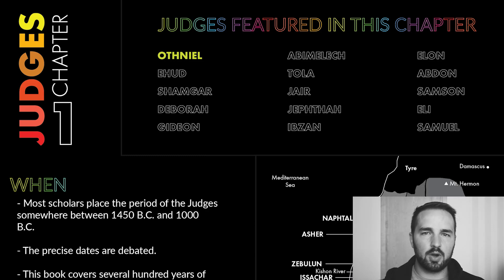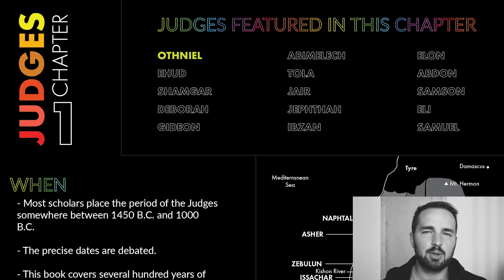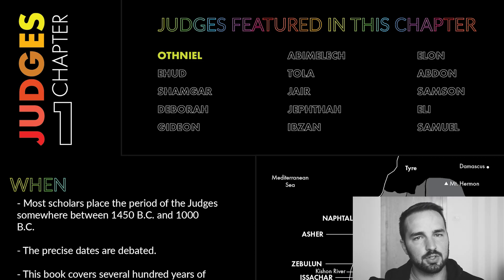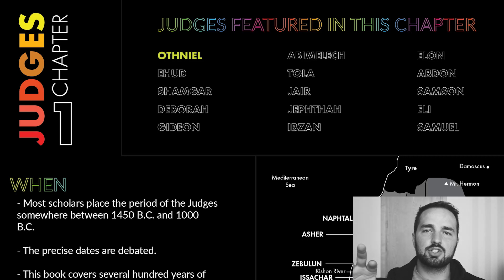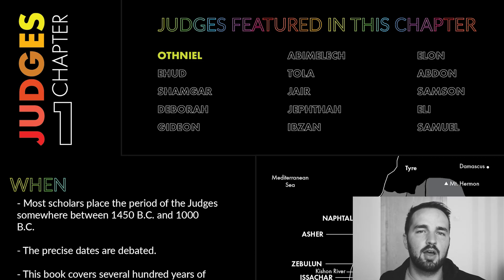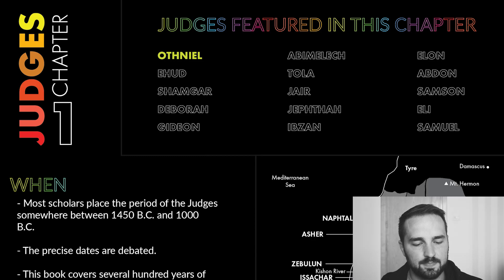In this chapter, we are introduced to one judge — the first judge. We're not going to talk about him a whole lot; he's really just introduced here and we'll pick it up in chapter three. That is Othniel, and he is highlighted here in our first section.